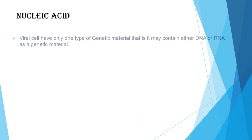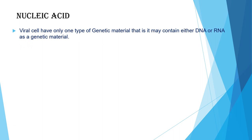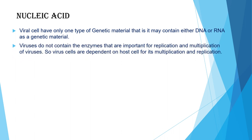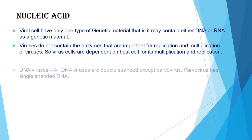Let us see nucleic acid. A viral cell has only one type of genetic material — it may contain either DNA or RNA as its genetic material, but not both. Viruses do not contain the enzymes that are important for replication and multiplication, so virus cells are completely dependent on the host cell for their multiplication and replication.